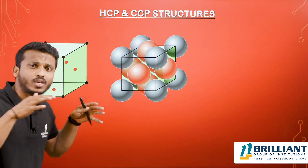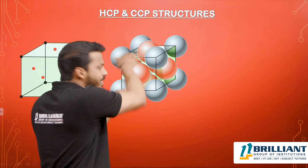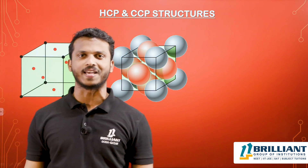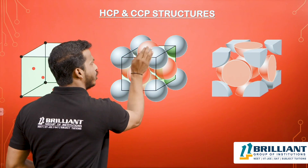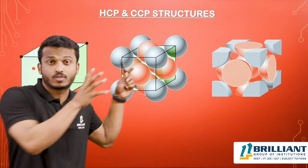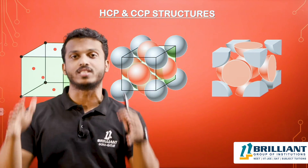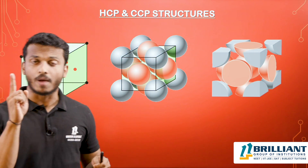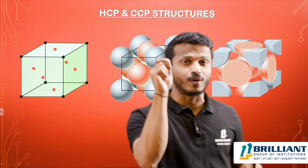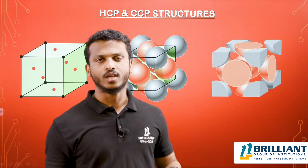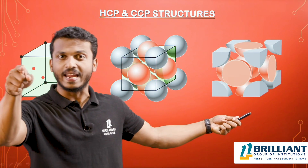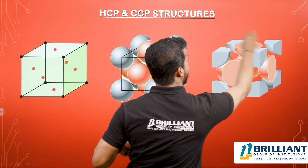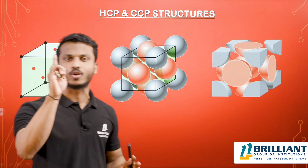Now, what is the total number of spheres present inside the unit cell? From each corner you get only one-eighth portion inside, because each corner sphere is shared by eight nearby unit cells. Total from eight corners: 8 × (1/8) = 1. Collecting all corner pieces together gives one complete sphere.